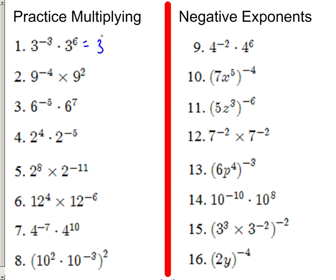This would be 3 to the third. This would be 9 to the negative second, so we need to make that a positive exponent. Always make it a positive exponent — just move it downstairs. Here would be 6 to the second power. Here would be 2 to the negative first, so we could just write 1 over 2.